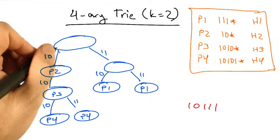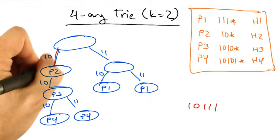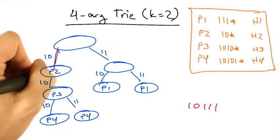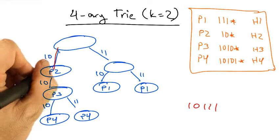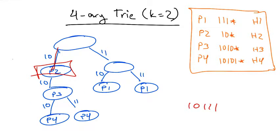Now suppose we want to look up 1, 0, 1, 1, 1. Again, we can spell this out, 1, 0, 1. And we can see that we get no further than p2, and again, we match at p2.